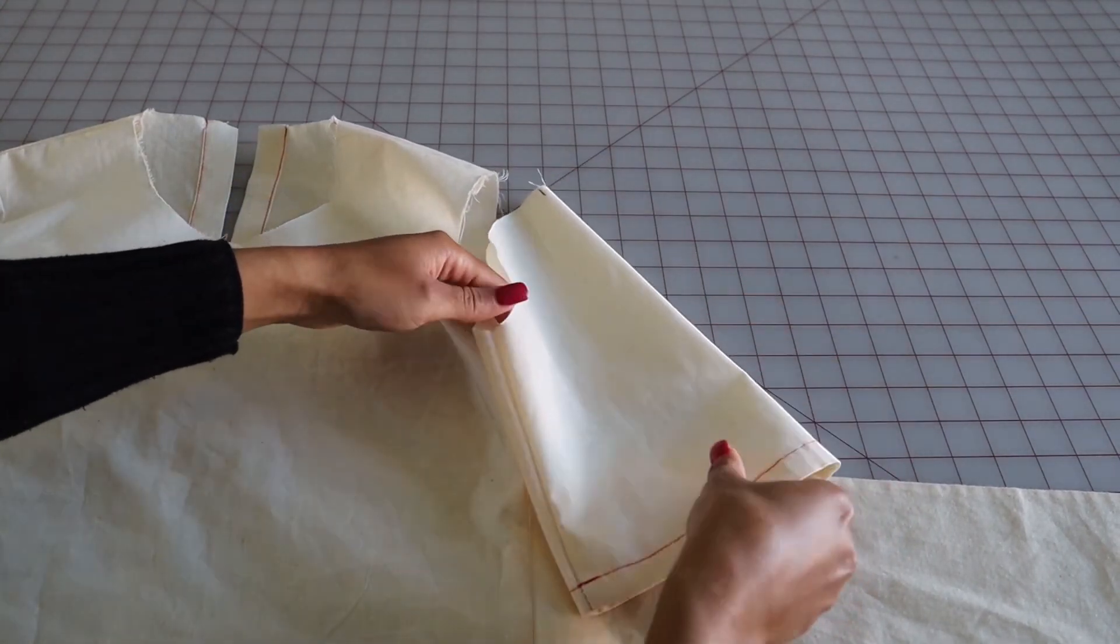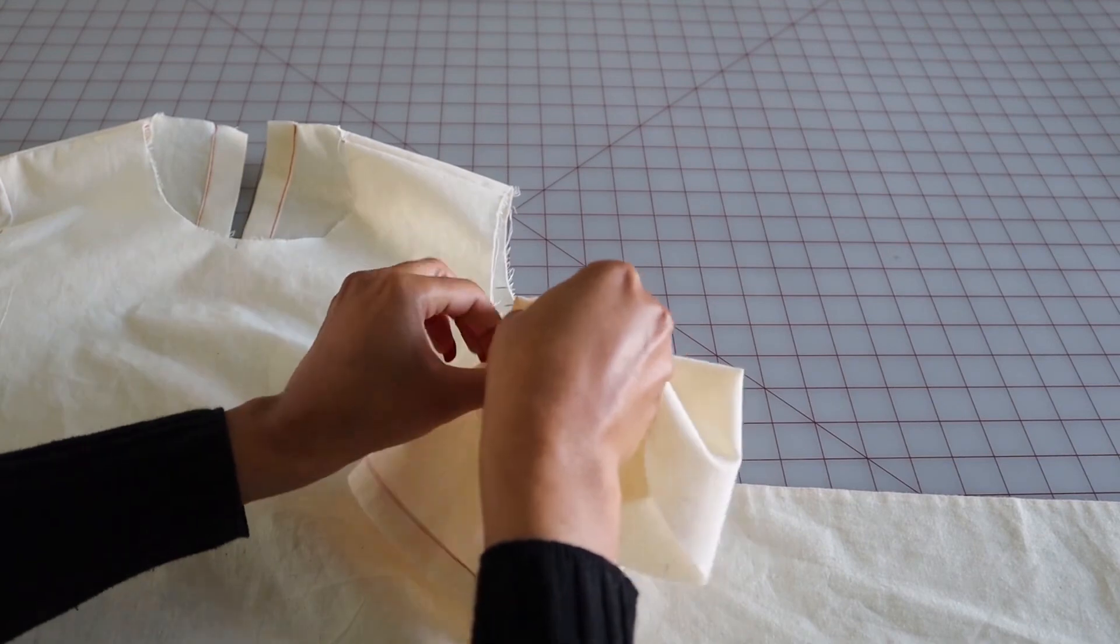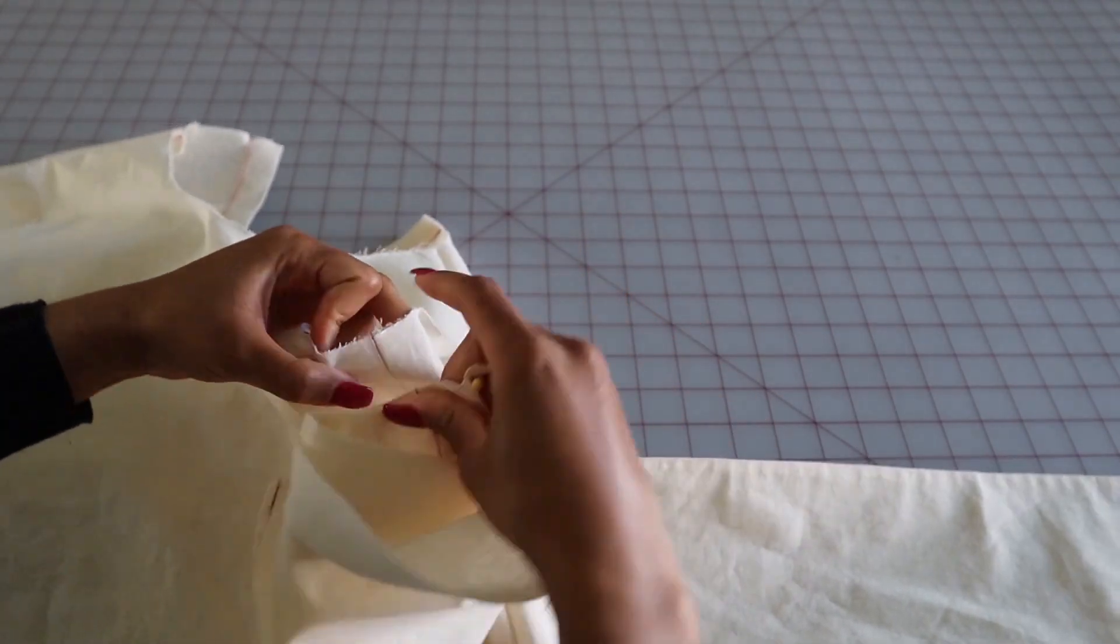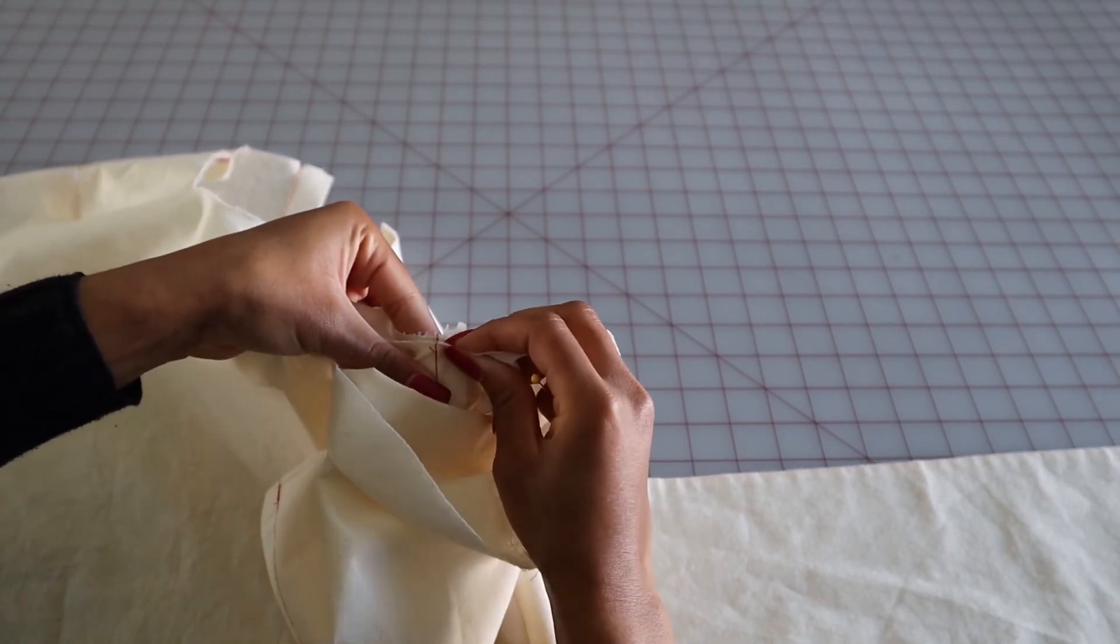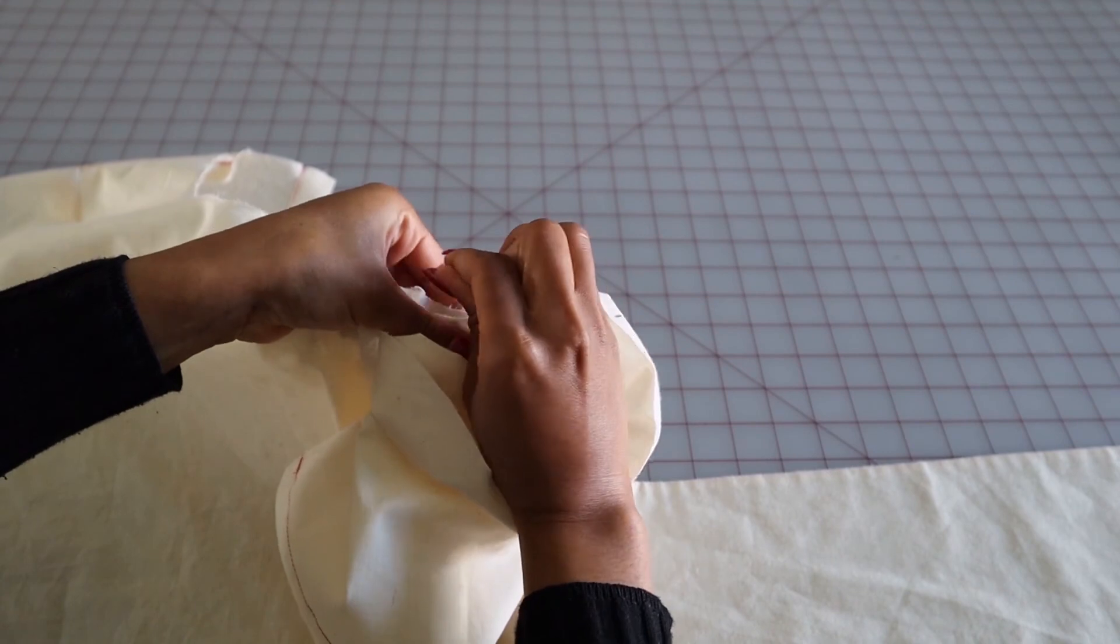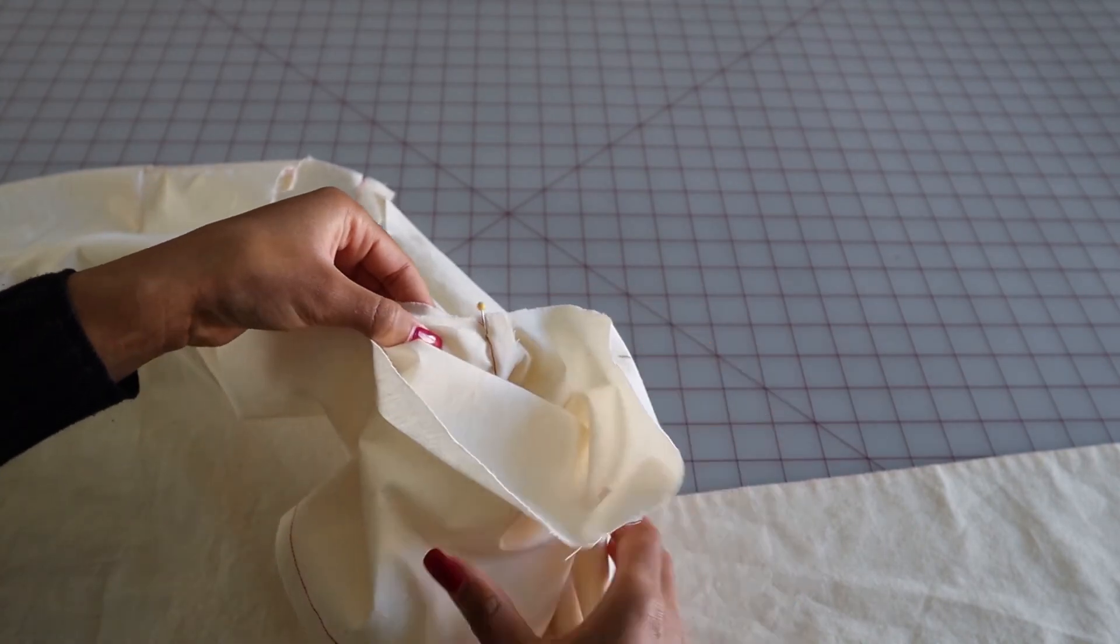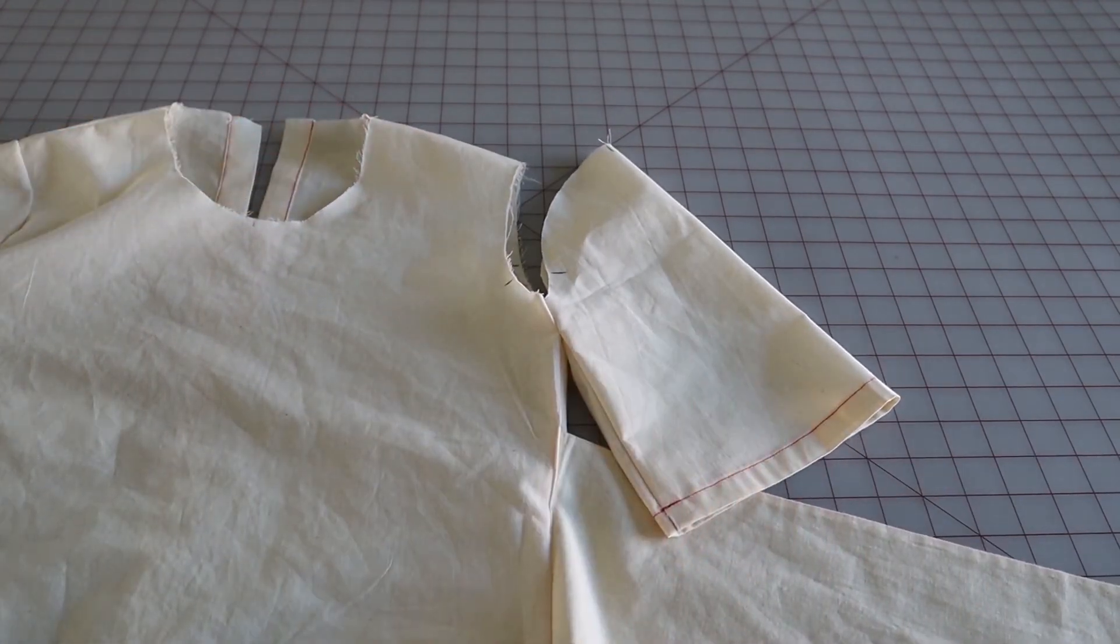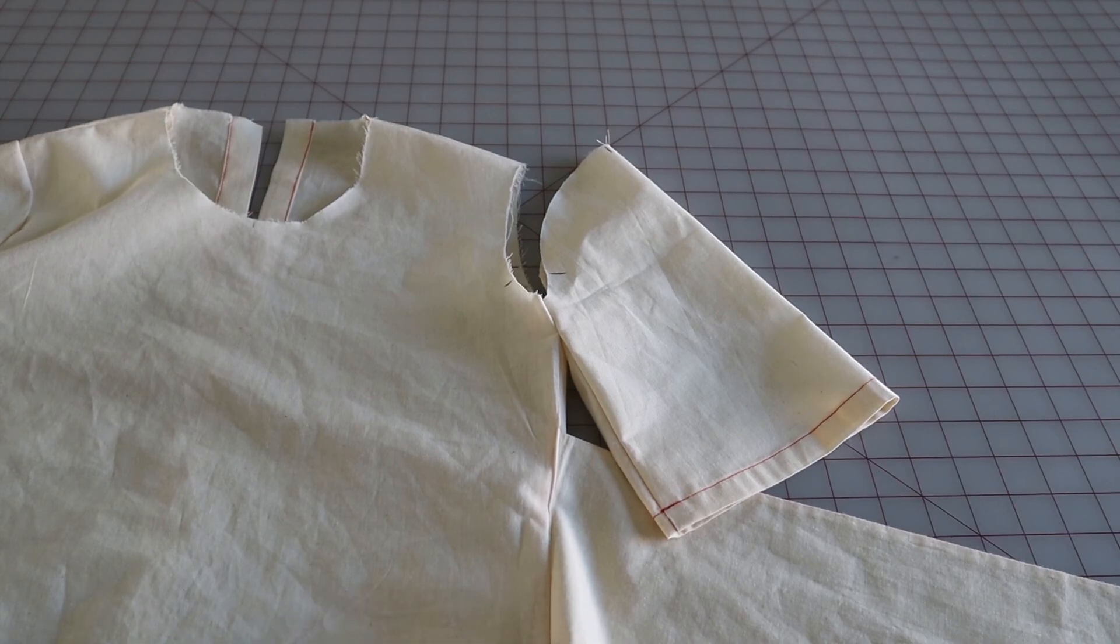So now we will do what we did the last time. We will match the side seam of the bodice with the sleeve seam, there just like so. So just match those two, line them up perfectly, and pin them into place. Like so. So so far it will look like this, and then you're going to do the same thing that you did the last time. You'll turn the bodice inside out over the sleeve, match the notches, pin into place, and then sew it.